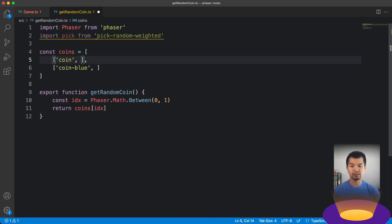And then the second entry is the weight. So let's just say this one is 10. And this is one. So that means that the normal coin is going to be 10 times more likely to appear than the blue coin.